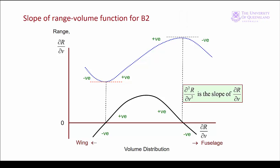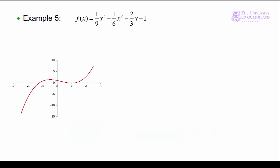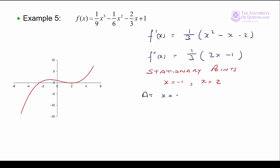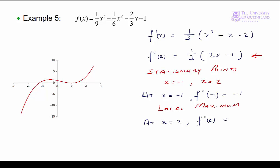Returning to our cubic function example, we look at the second order conditions. The first derivative was (1/3)(x² − x − 2), so the second derivative is (1/3)(2x − 1). Evaluating at the stationary points: at x = −1, the second derivative equals −1, which is negative — so we have a local maximum. At x = 2, the second derivative equals +1, which is positive — so we have a local minimum.